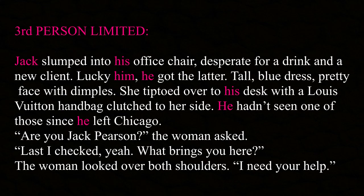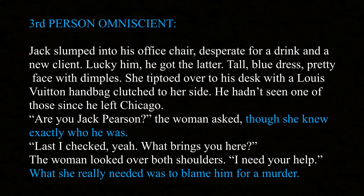Now I'm going to do that exact same paragraph in third person omniscient. The first paragraph won't change, but once the woman starts talking it does. I'll pick it up right there: 'Are you Jack Pearson?' the woman asked, though she knew exactly who he was. 'Last I checked, yeah. What brings you here?' The woman looked over both shoulders. 'I need your help.' What she really needed was to blame him for a murder. So if you notice, it's basically the same as third person limited, but we do get the woman's perspective — she knew exactly who he was. We get inside her head, then we're right back into the regular story, and at the end we see her intentions: what she really needed was to blame him for a murder.